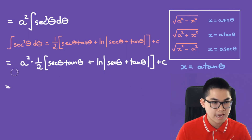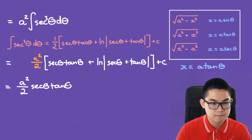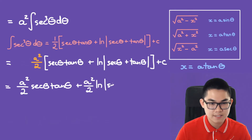Let's multiply a squared through. We get a squared over 2 times secant times tan, plus a squared over 2 times the ln of the absolute value of secant plus tan.